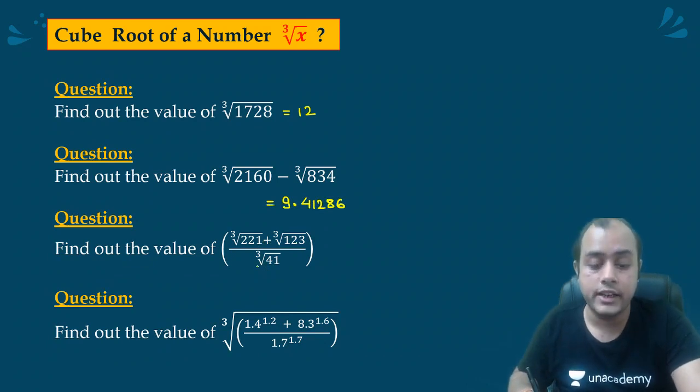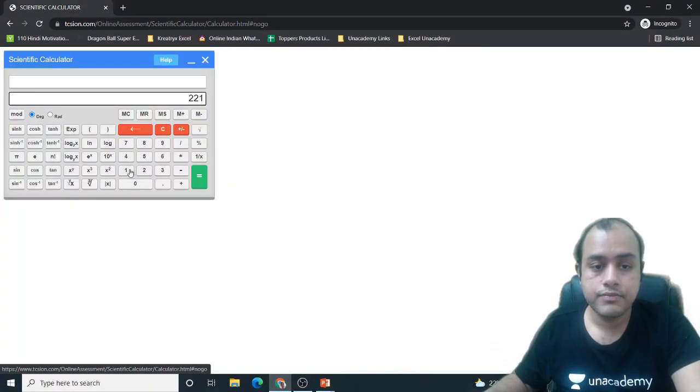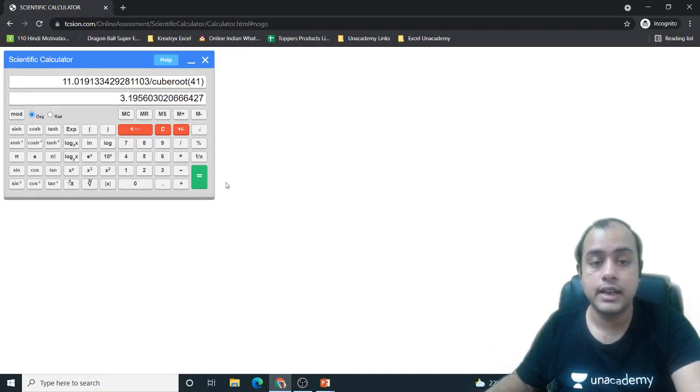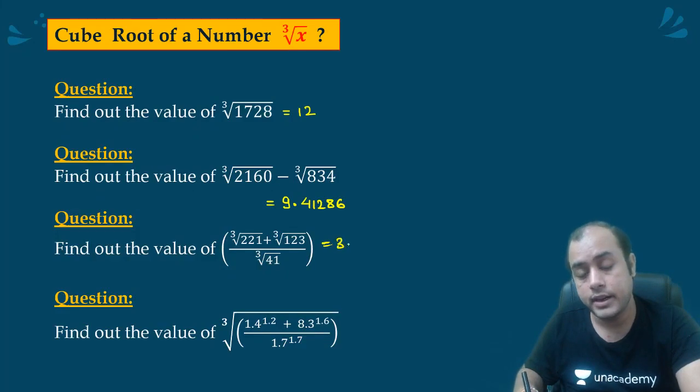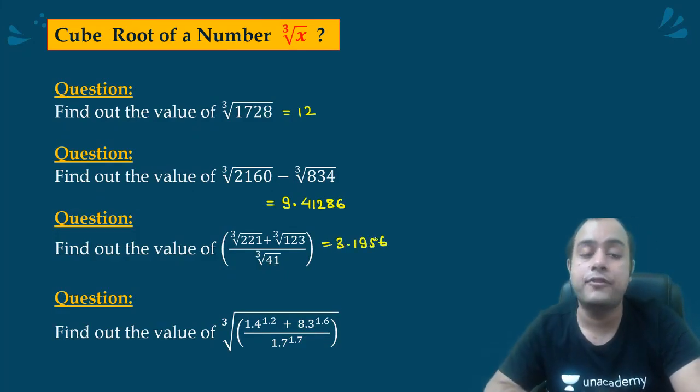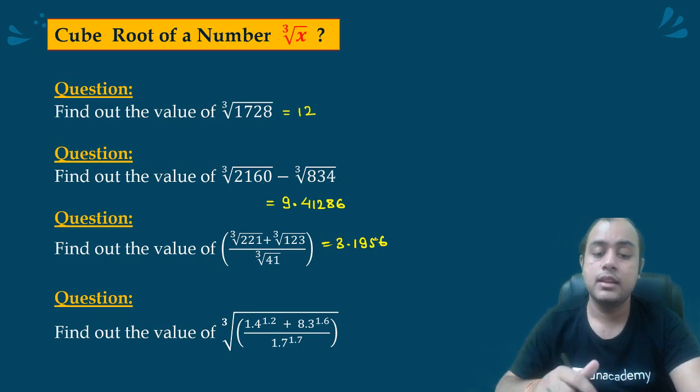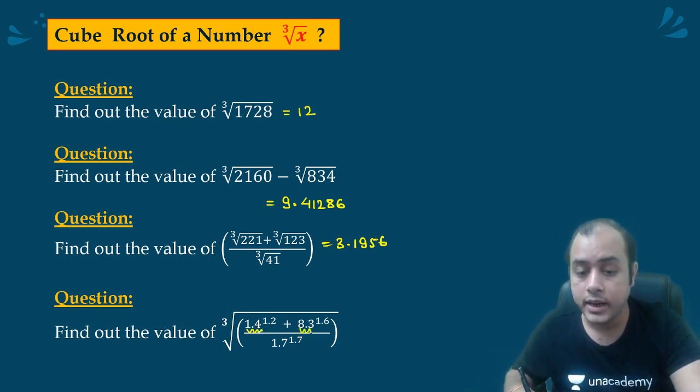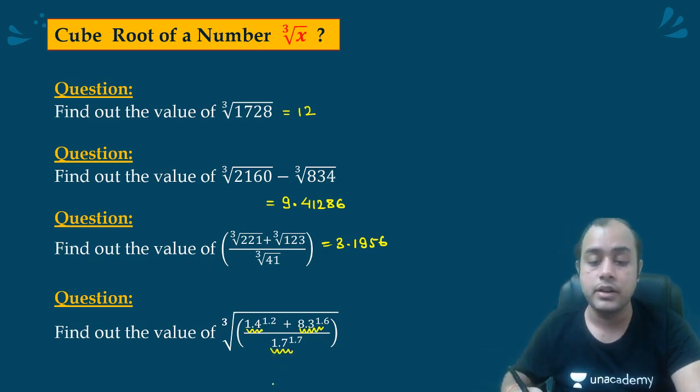221 plus 123 by 41, plus 123, take the cube root. Don't press equal to before. Now press equal to. By root over 41, 41 cube root, 3.1956. Don't note down any value before pressing equal to because the calculator actually displays an intermediate result, not the final result. So before you actually take down the value in your copy, make sure that you press equal to.